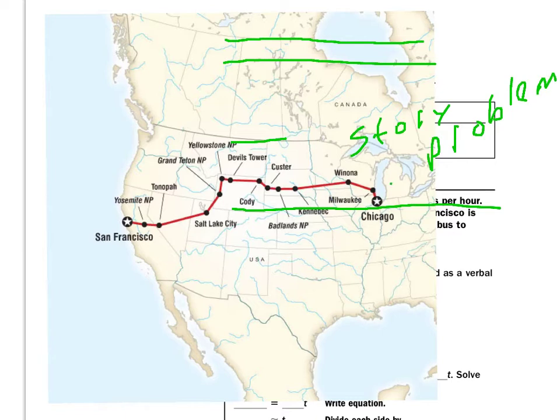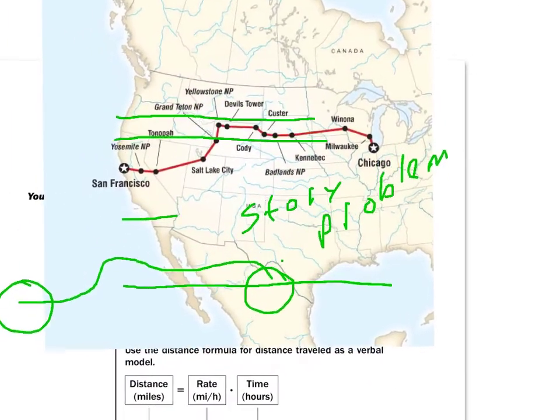Here's us right here. Here's Chicago. Here's San Francisco. 55 miles an hour all the way through all this area.